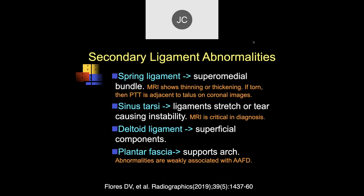As far as abnormalities, there's the spring ligament — especially the superior medial bundle — which goes underneath the posterior tibialis tendon. When you have injury to the spring ligament you stop supporting the central arch. MRI shows thinning or thickening; if torn, the PTT becomes adjacent to the talus on the coronal image. There are three components of the superior medial bundle of the spring ligament. There's also the sinus tarsi — when its ligaments are torn, it can lead to instability and sinus tarsi syndrome.